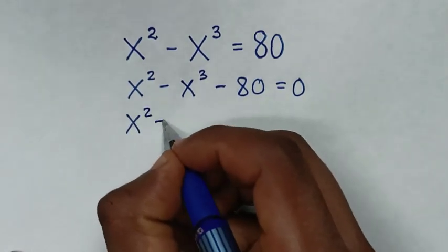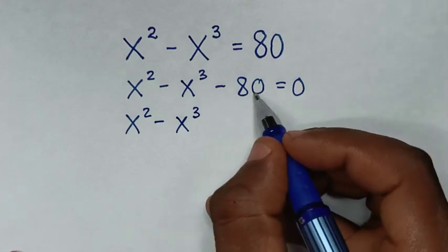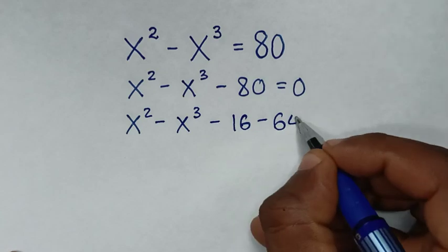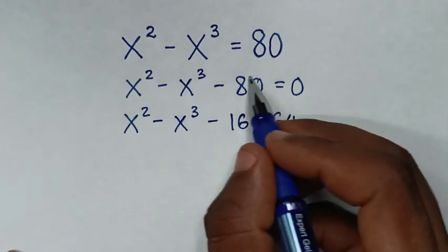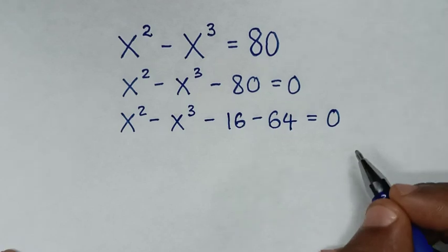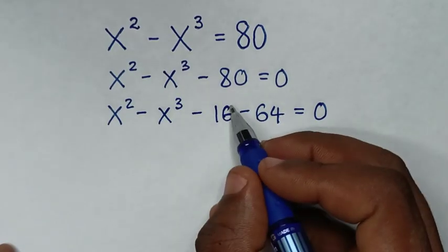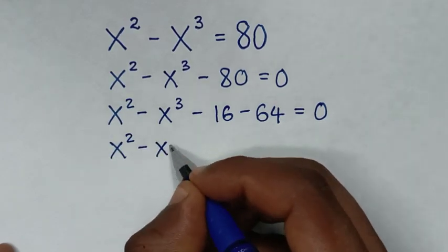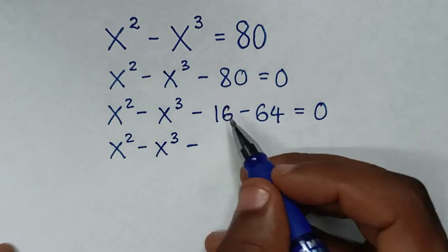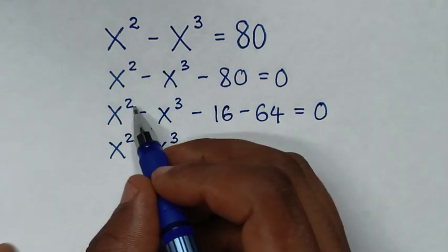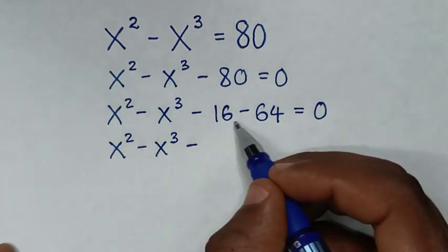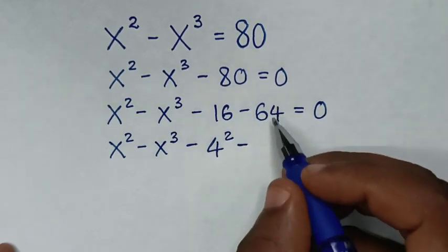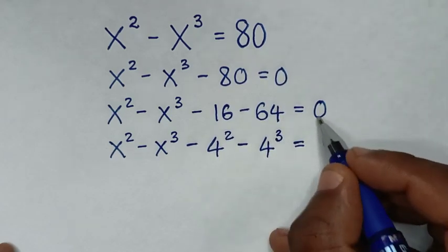So it will be x squared minus x cubed minus 80 is the same as minus 16 minus 64. Minus 16 minus 64 is minus 80, is equal to 0. Then we will place this in terms of exponents.